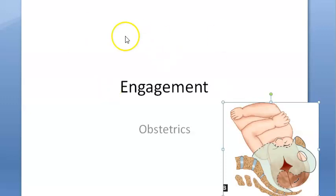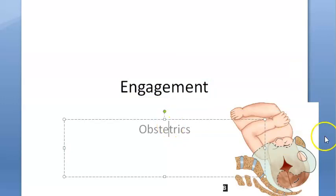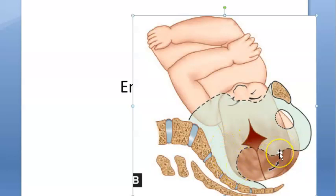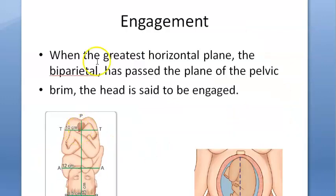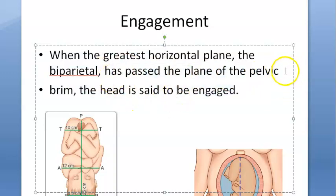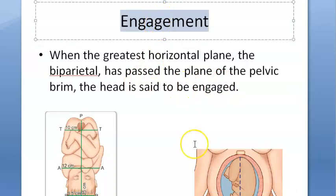In this video we want to understand the terminology 'engagement' in obstetrics. In a cephalic presentation, where the head comes out first, engagement has occurred when the fetal skull's biparietal diameter — from one side to the other — has crossed the pelvic brim. The greatest horizontal plane, the biparietal diameter of 9.5 cm, has passed the plane of the pelvic brim. This is when the head is said to be engaged.